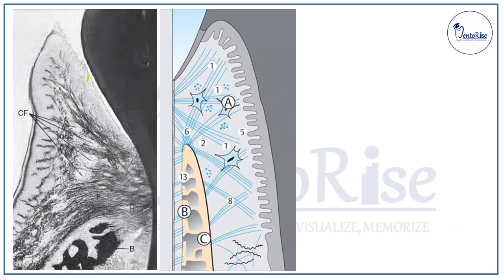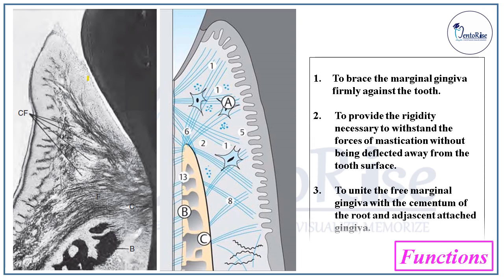Collectively, the gingival fibers function to brace the marginal gingiva firmly against the tooth. They provide the rigidity necessary to withstand the forces of mastication without being deflected away from the tooth surface. They also function to unite the free marginal gingiva with the cementum of the root and the adjacent attached gingiva.